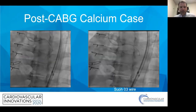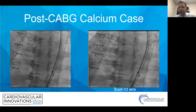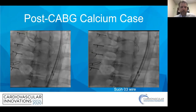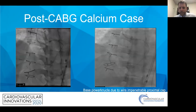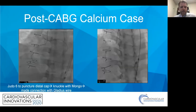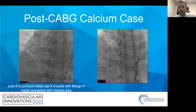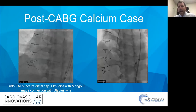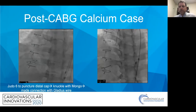Finally ready to do the CTO, distal tip injections showed a nice omega jump rope in the epicardial. Using a Suoh 03 and Corsair Pro XS microcatheter, we got across. I ended up doing a GATT retrograde but it was still a little ambiguous, so I did a BASE power knuckle anterograde to solve the proximal cap ambiguity, meeting in the middle of the CTO segment and performing guidewire-assisted reverse CART. A Judkins 6 made the connection after knuckling up with a Mongo, finishing with heavy calcium and anatomic ambiguity in this post-CABG patient.